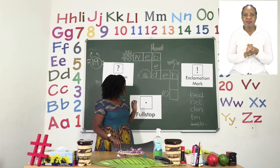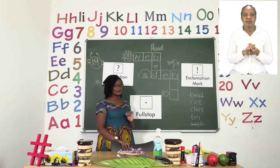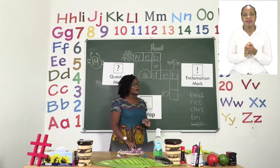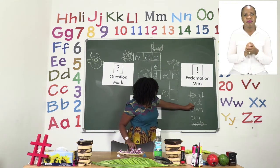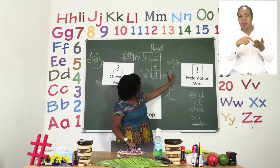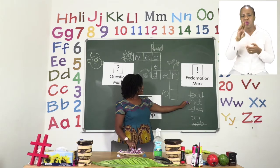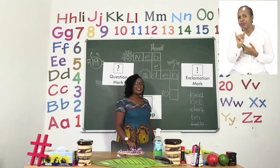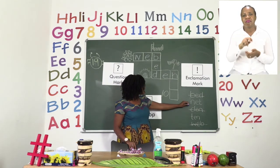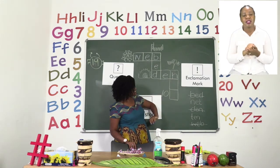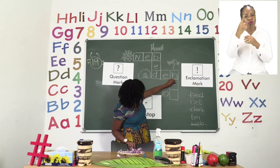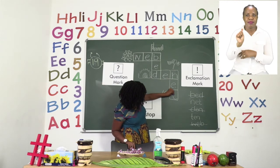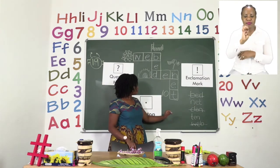Well done boys and girls! Now we are going to go ahead and continue. We have our picture going down. After crossing out the word 'den', we need to find out what this picture is. Is it the word 'net' or the word '10'? Well done! It is the word 'net', because we already have our N. So let us write the E and the T to spell the word 'net', and let us cross it out.